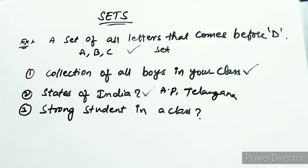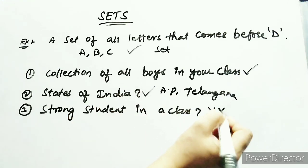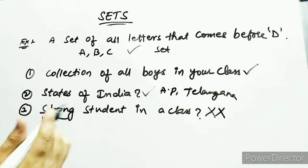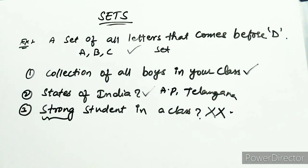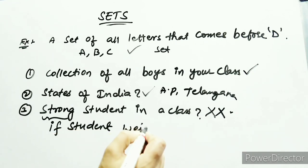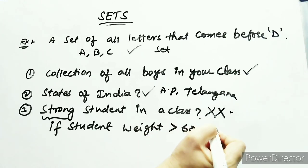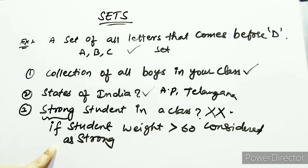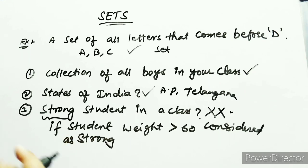If you say 'strong student in a class,' it is not a set because 'strong' is a relative term. But if you add a condition — for example, if a student's weight is greater than 60, consider as strong — then you can form a set. Another example: students who scored 70 percent or above marks in the last semester. You can form a set of how many students got 70 percent marks.